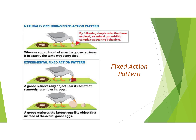Another example of a fixed action pattern is a goose with eggs. A defining characteristic of a fixed action pattern is that it occurs no matter what and to completion. If an egg rolls out of the nest, the goose will go get it and roll it back. But the goose will bring back any object near its nest — even a can — or another species' egg. Once it starts rolling the egg back, it will continue that rolling motion until it reaches the nest, even if the egg falls away again. The defining features are that the behavior is innate, occurs no matter what, and is completed fully.